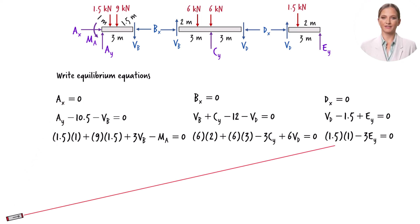Since this equation contains only one variable, we can use it to determine Ey. And if we substitute 0.5 for Ey in this equation, we can solve for Vd.